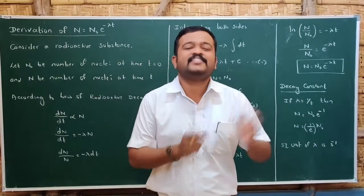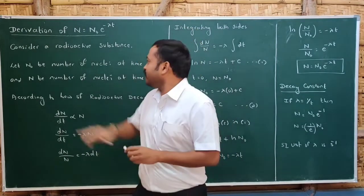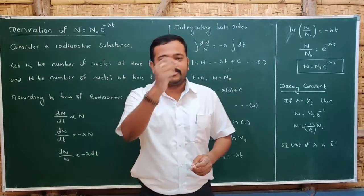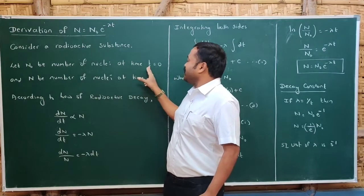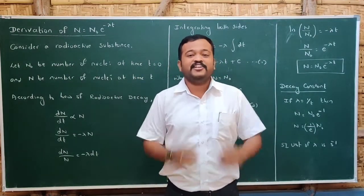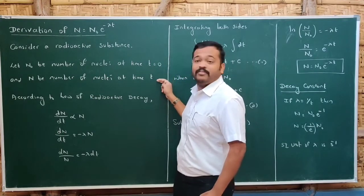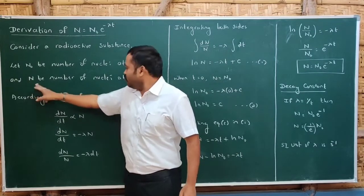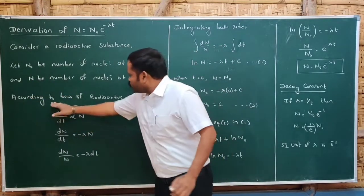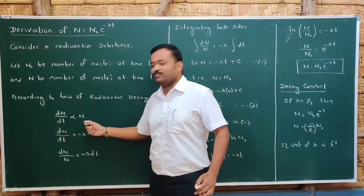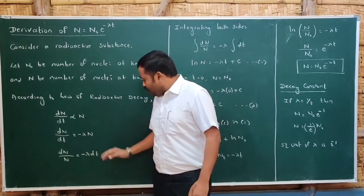Now we derive the expression for the number of nuclei remaining at time t: N = N₀e^(−λt). Let N₀ be the number of nuclei at time t = 0 (initial number of nuclei), and let N be the number of nuclei at time t. Using the law of radioactive decay, dN/dt = −λN, we rearrange to integrate both sides.